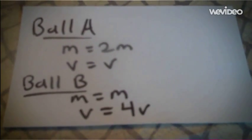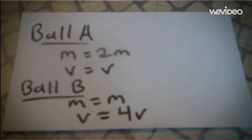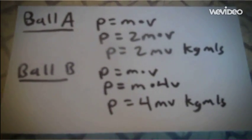Okay, now ball A has a mass of 2 meters and a velocity of v. Ball B has a mass of m and a velocity of 4v. Which has more momentum? Ball B.